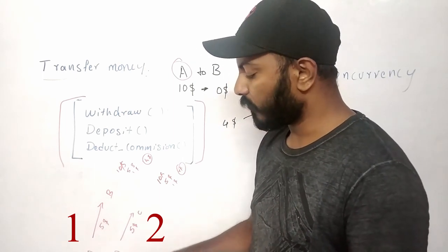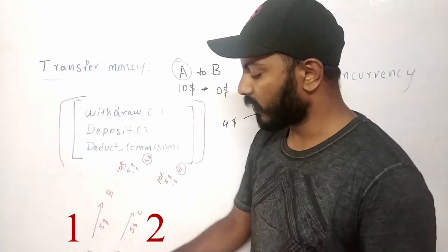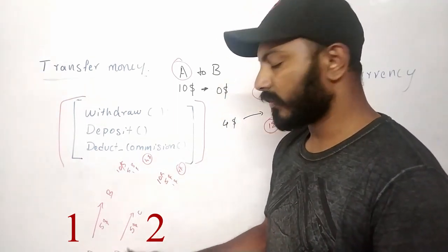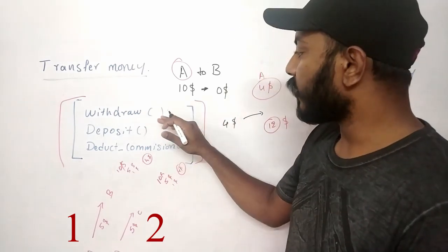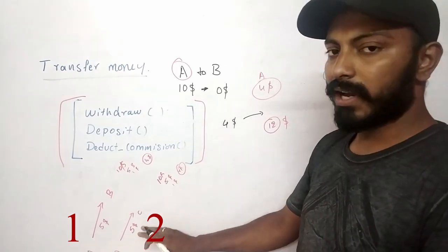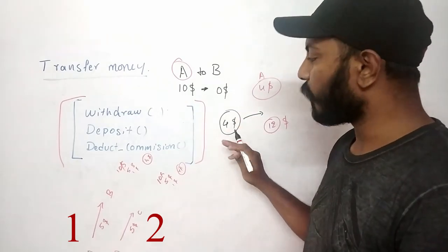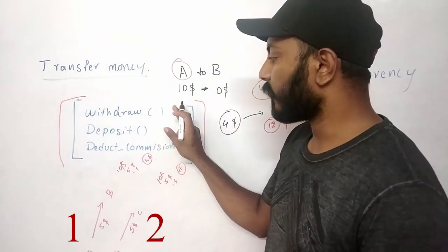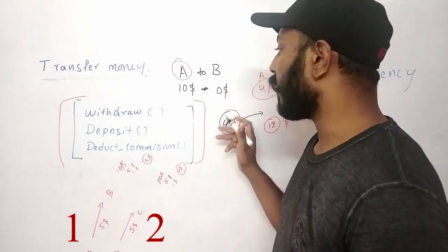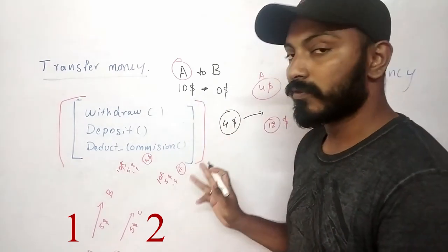Then the second connection or thread acquires the lock. The transaction starts and tries to withdraw $5, intending to deposit to C. But now the account balance is only $4. This transaction will fail on the very first instruction because you cannot deduct $5 from a balance of $4. This is how it was supposed to work — the transaction saved us from going bankrupt.